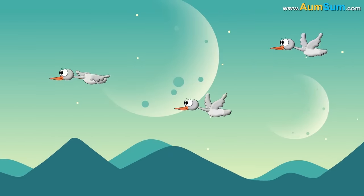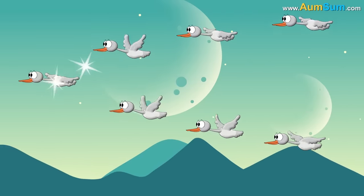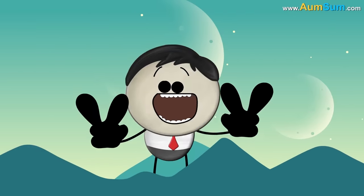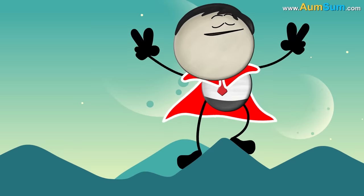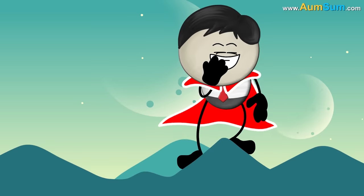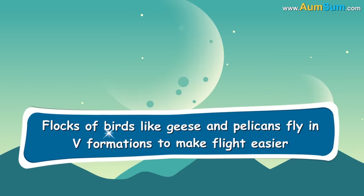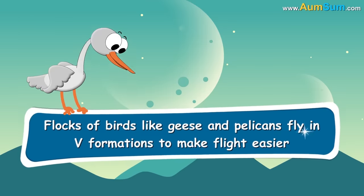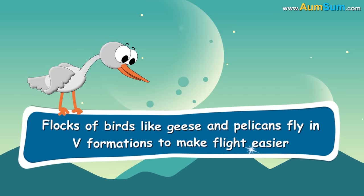Why do birds fly in V formation? Because V is for victory. Oh dude. Flocks of birds like geese and pelicans fly in V formations to make flight easier.